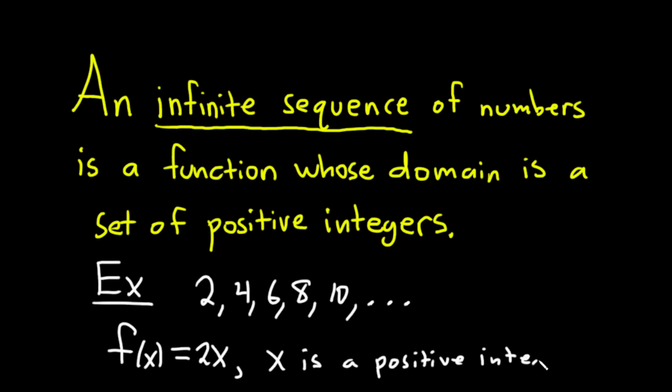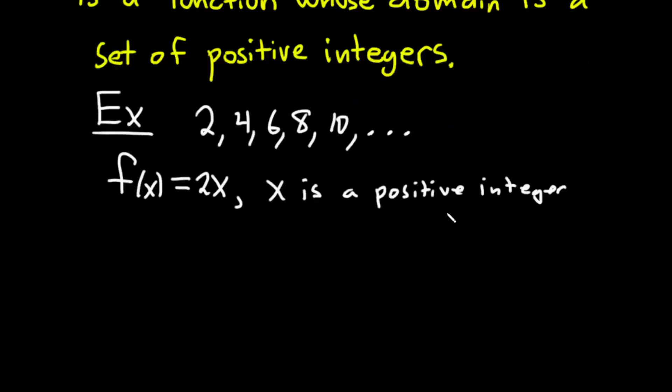We just typically don't think of them as functions. But if you were to look at F of 1, you would get 2 times 1, which is 2. And this would be the first term of the sequence. So A sub 1, perhaps.